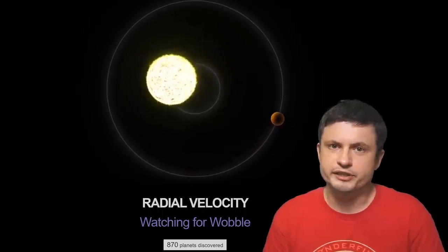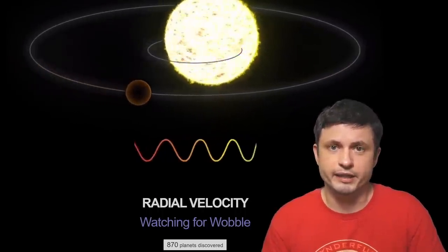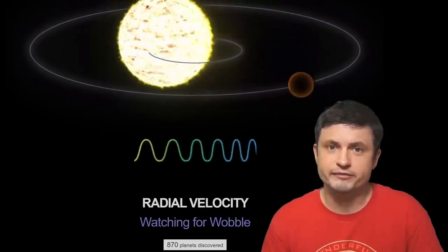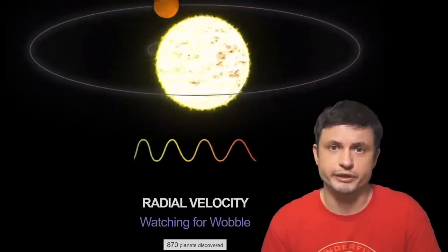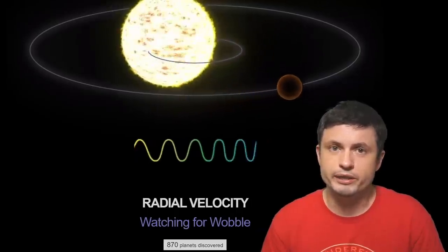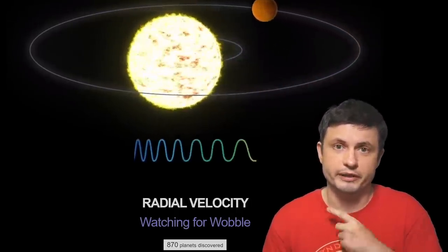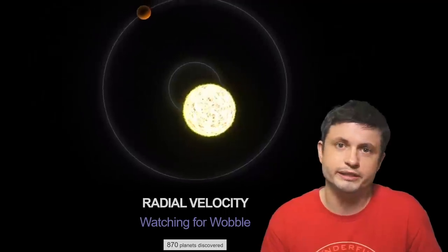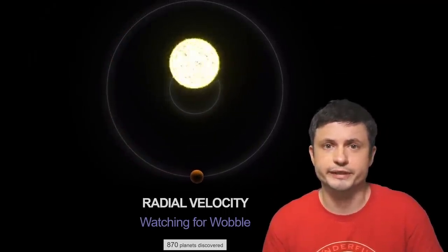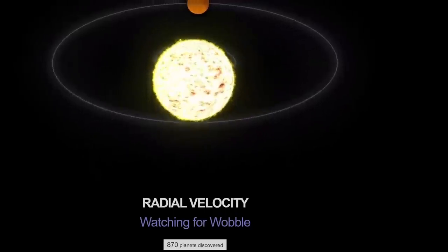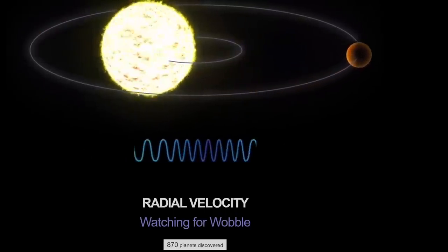The other very successful method is this right here, the radial velocity or the wobbling method. This is when the planet is really massive and it causes the star itself to sort of move back and forth as it travels across the galaxy. But this of course requires a very massive planet. And so all of the planets discovered using this method are normally quite extreme in terms of mass, but also usually are really close to the star itself. In order for them to pull at the star and to make the star wobble this way, they do have to be relatively close to the star itself.